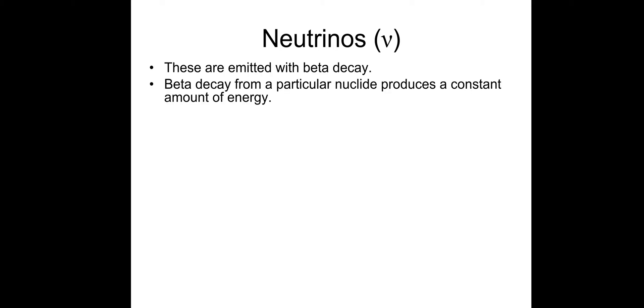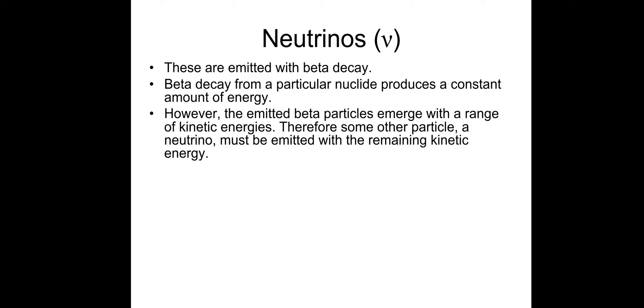So neutrinos, symbol nu, they're emitted with beta decay. So beta decay from a particular nuclei produces a constant amount of energy. However, the emitted beta particles emerge with a range of kinetic energies. Therefore, there must be some other particle, which was coined a neutrino, must be emitted to take up the remaining kinetic energy.